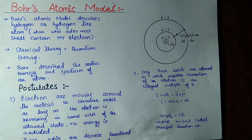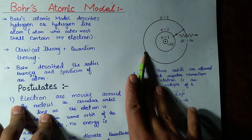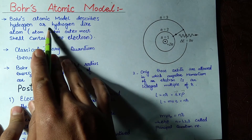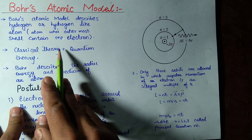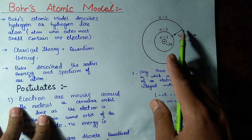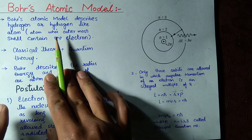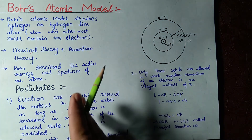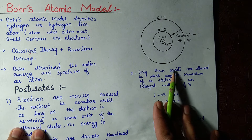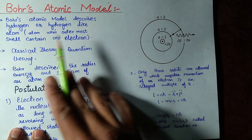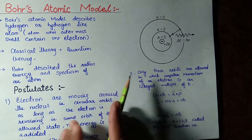Today we are going to discuss the postulates of Bohr's atomic model, which we will use in our next lectures. Bohr's atomic model describes hydrogen or hydrogen-like atoms — atoms whose outermost shell contains one electron. It doesn't tell us much about shared electrons, because when electrons are shared the energies are separated. In Bohr's atomic model there is a mixture of classical theory and quantum theory.